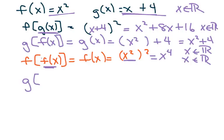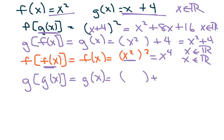For g composed of g of x, I write down g of x, which is x plus 4, and everywhere there's an x I put parentheses and dump in g of x, which is x plus 4. That gives x plus 8, and x belongs to all reals.